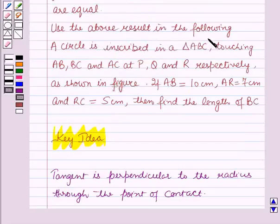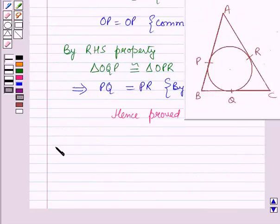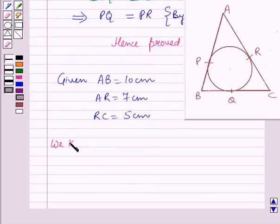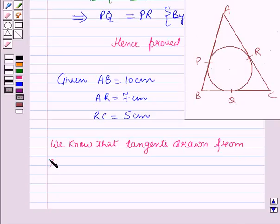Now we will use this result in solving the second part of the question. In this diagram, AB is equal to 10 cm, AR is equal to 7 cm, and RC is equal to 5 cm. We know that tangents drawn from an external point to a circle are equal in length.